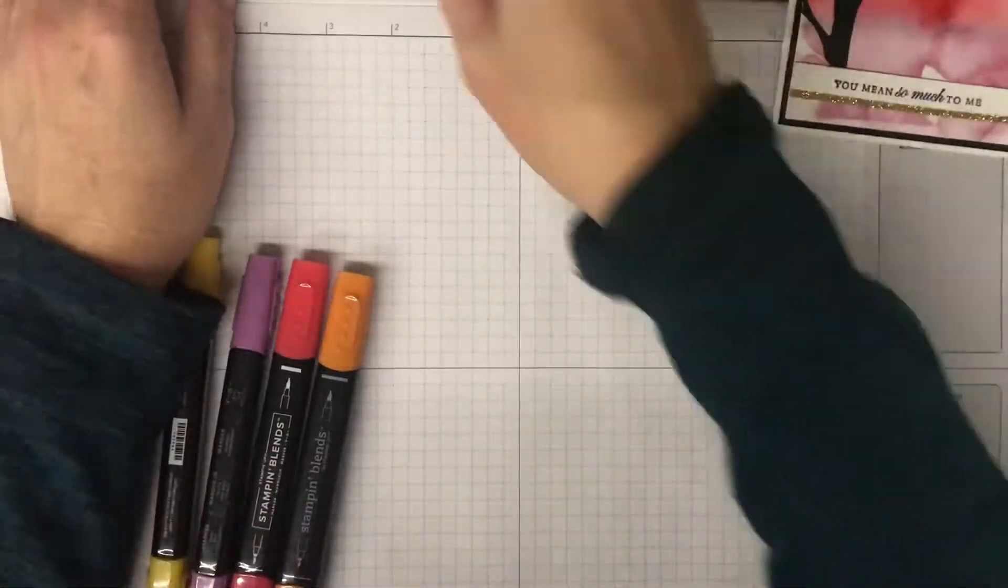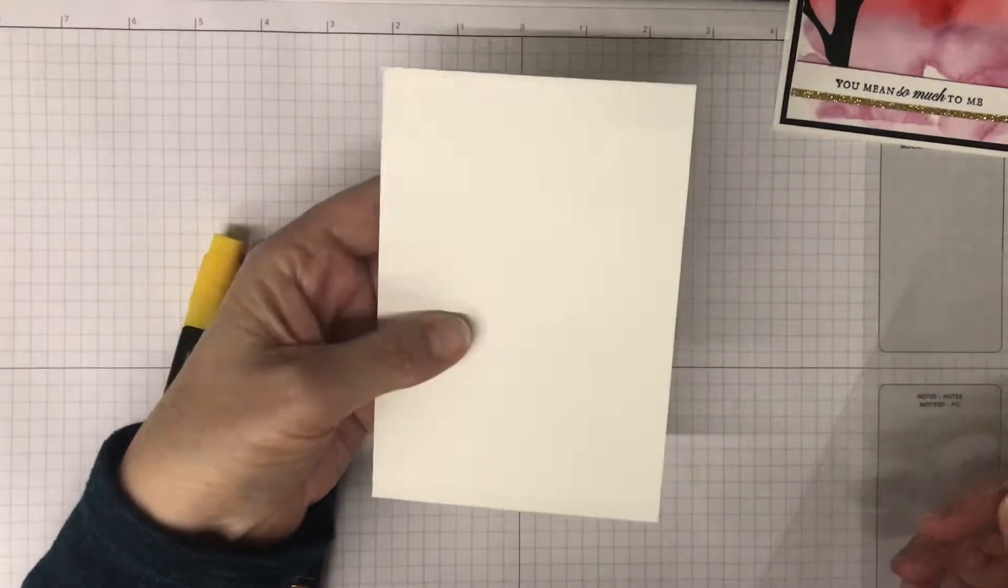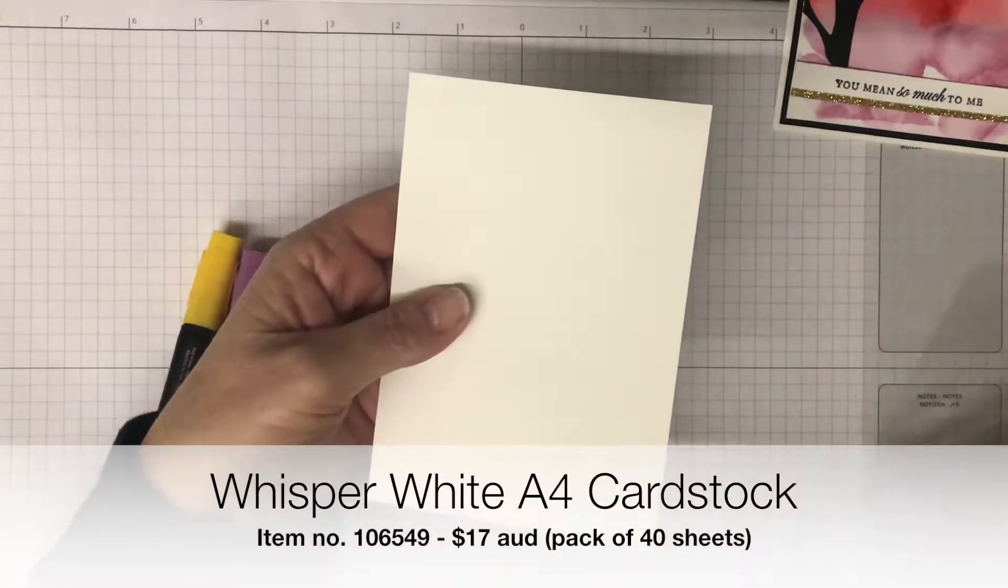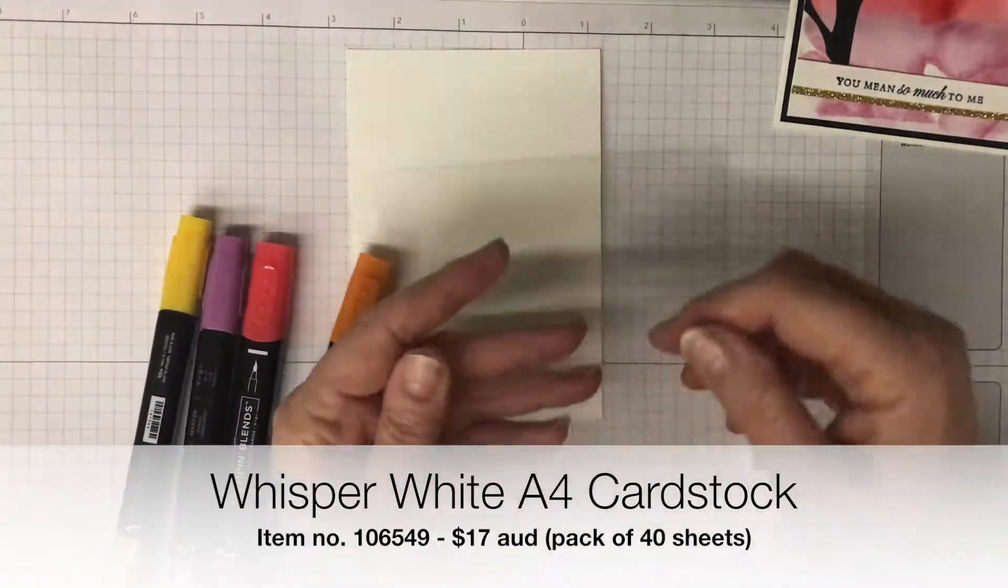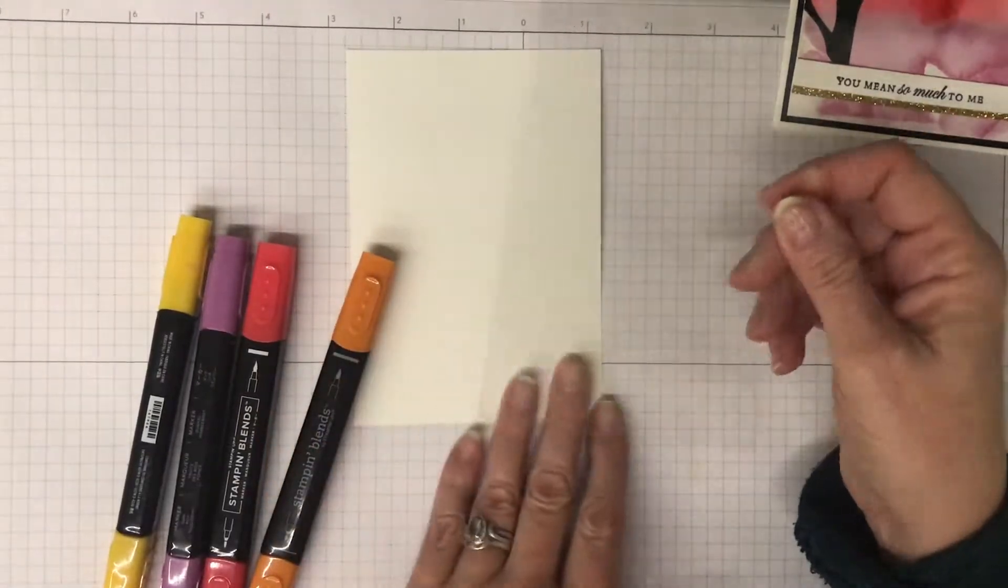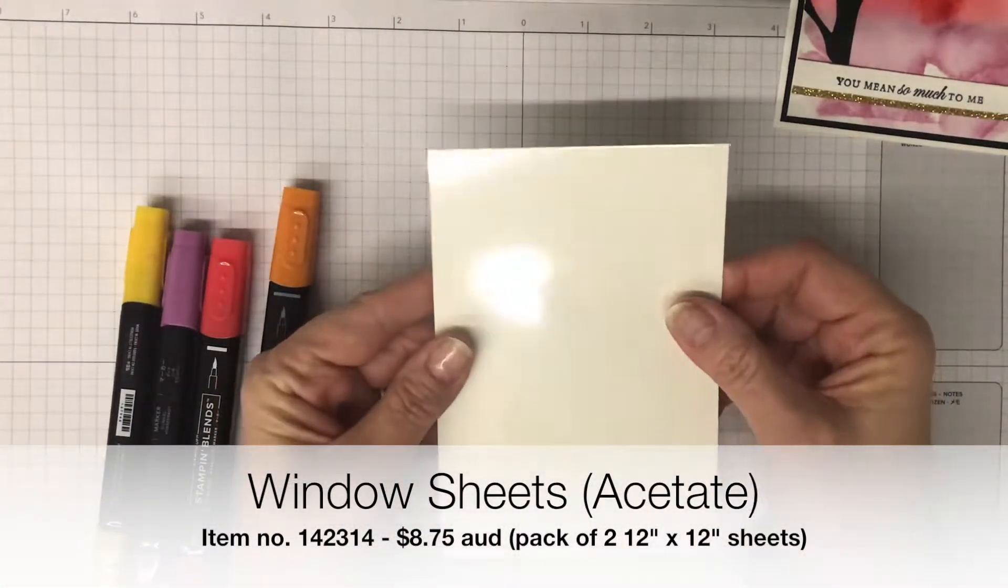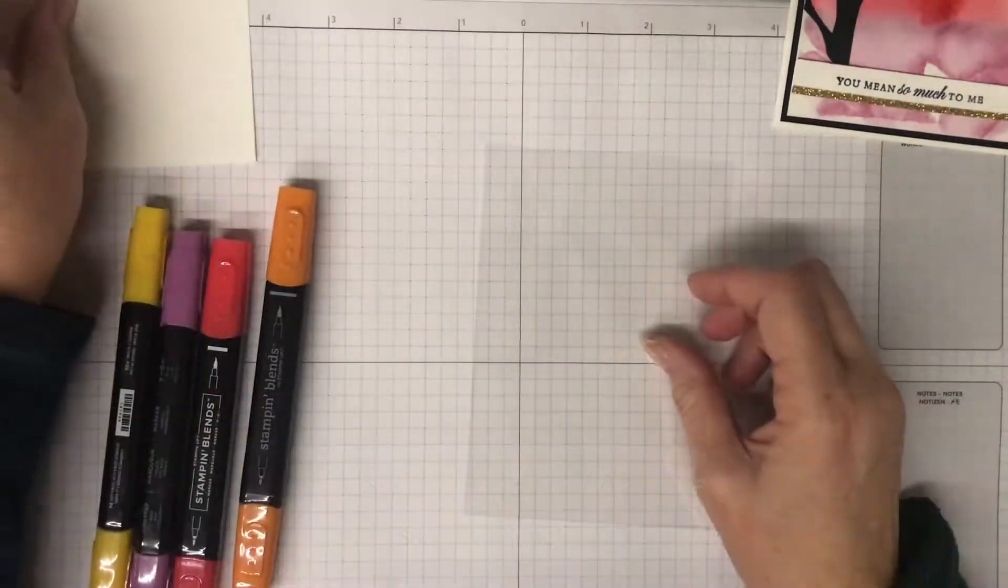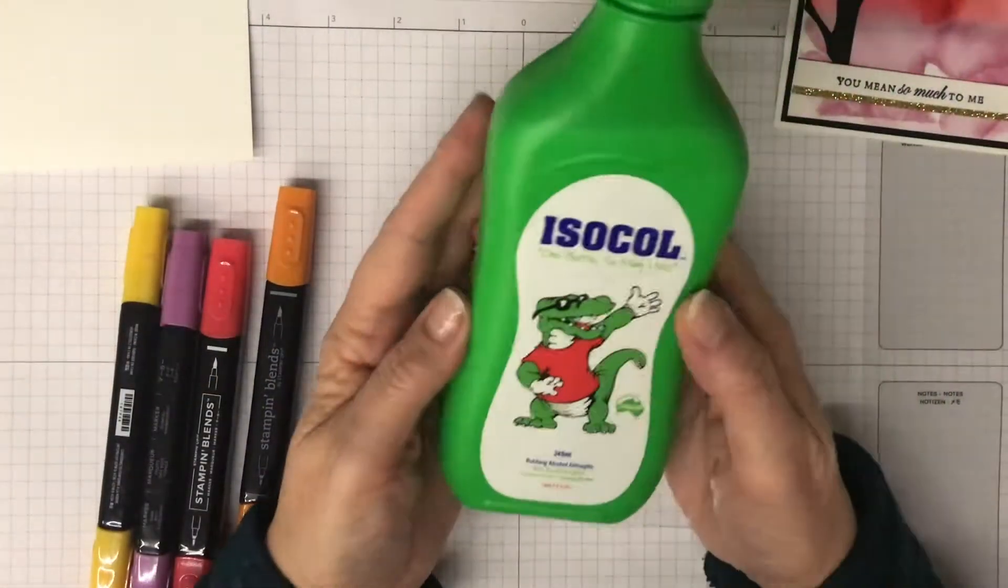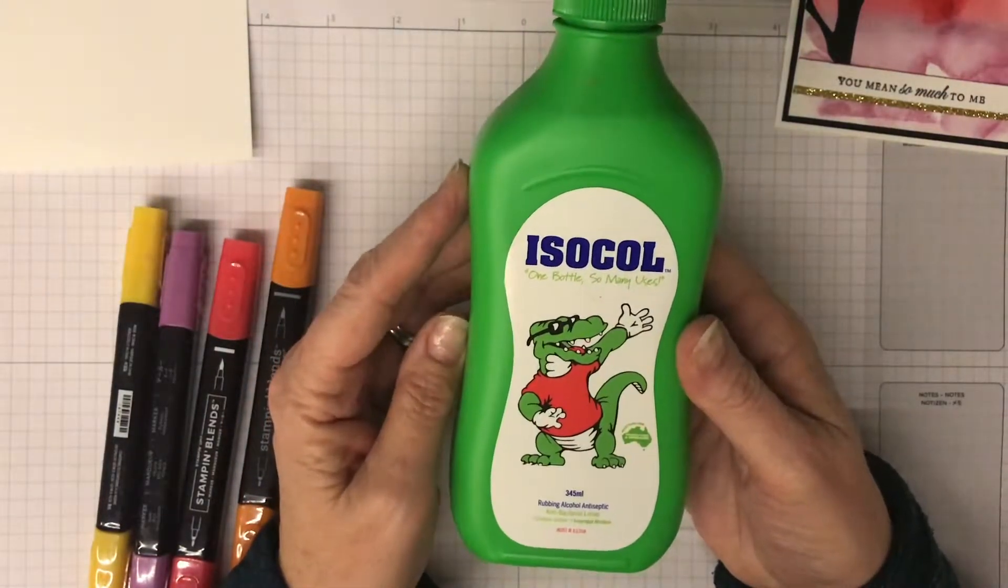You're going to need a piece of neutral colored light cardstock—I'm using Whisper White from Stampin' Up, which is a great cardstock, nice and smooth to work on. I've also got a piece of acetate cut to roughly the same size, and some rubbing alcohol. In Australia I'm using Isocol, but any rubbing alcohol will be fine.